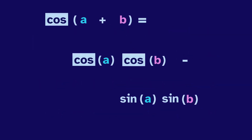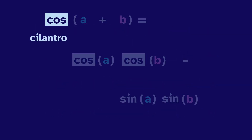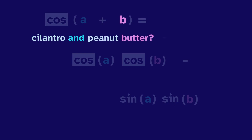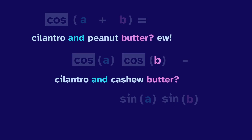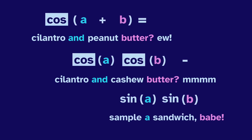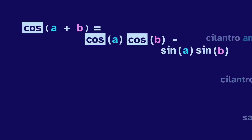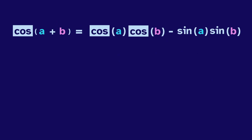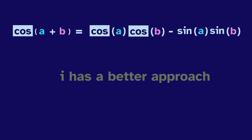We could use a mnemonic like cilantro and peanut butter — ew — cilantro and cashew butter — mmm — sample a sandwich, babe. And this may be useful, but I kinda dislike this memorization method because it doesn't actually help us to understand this identity. Luckily, there's a better approach.